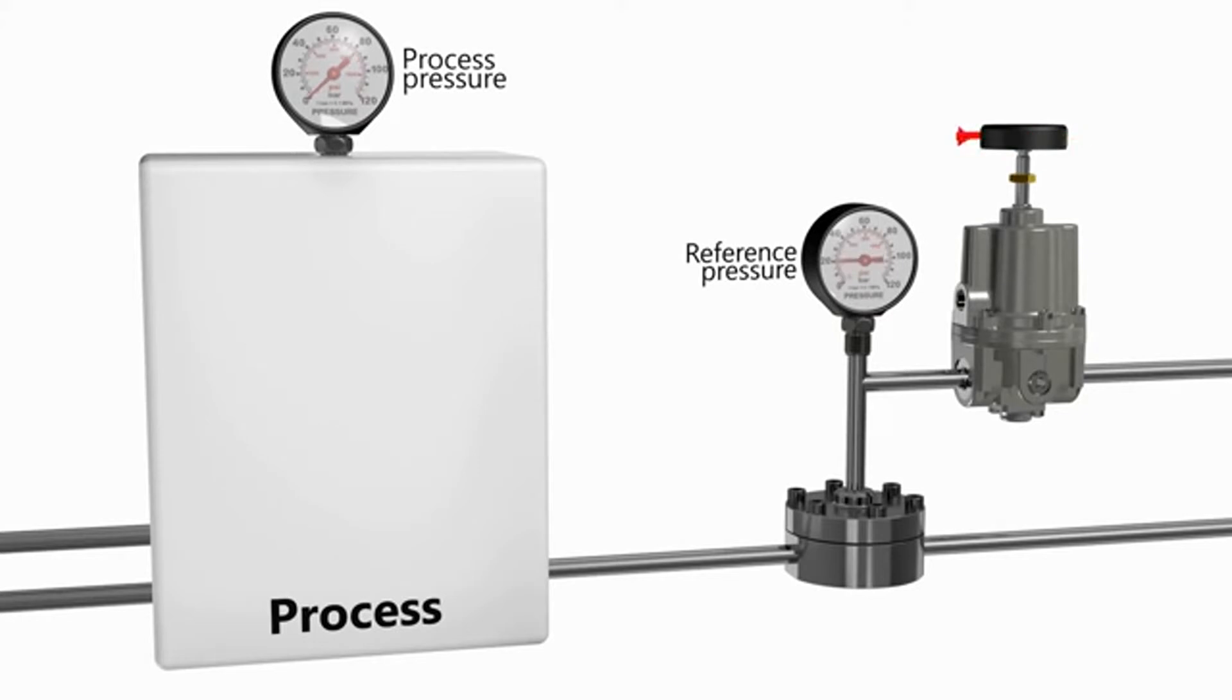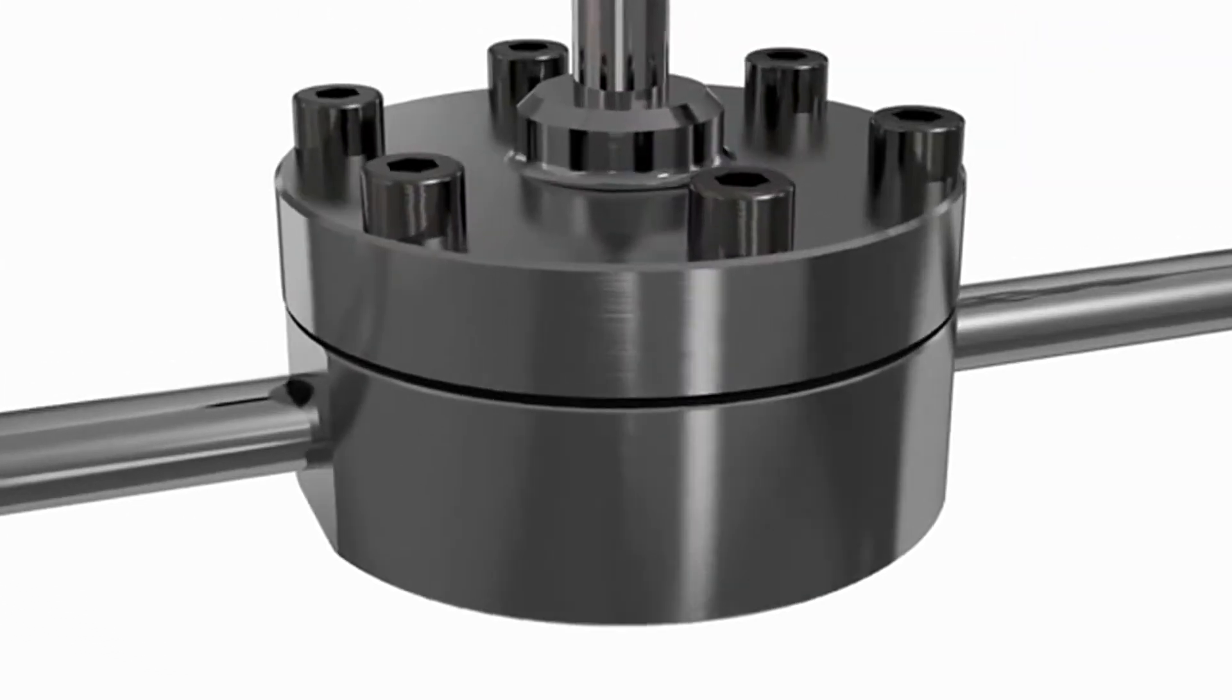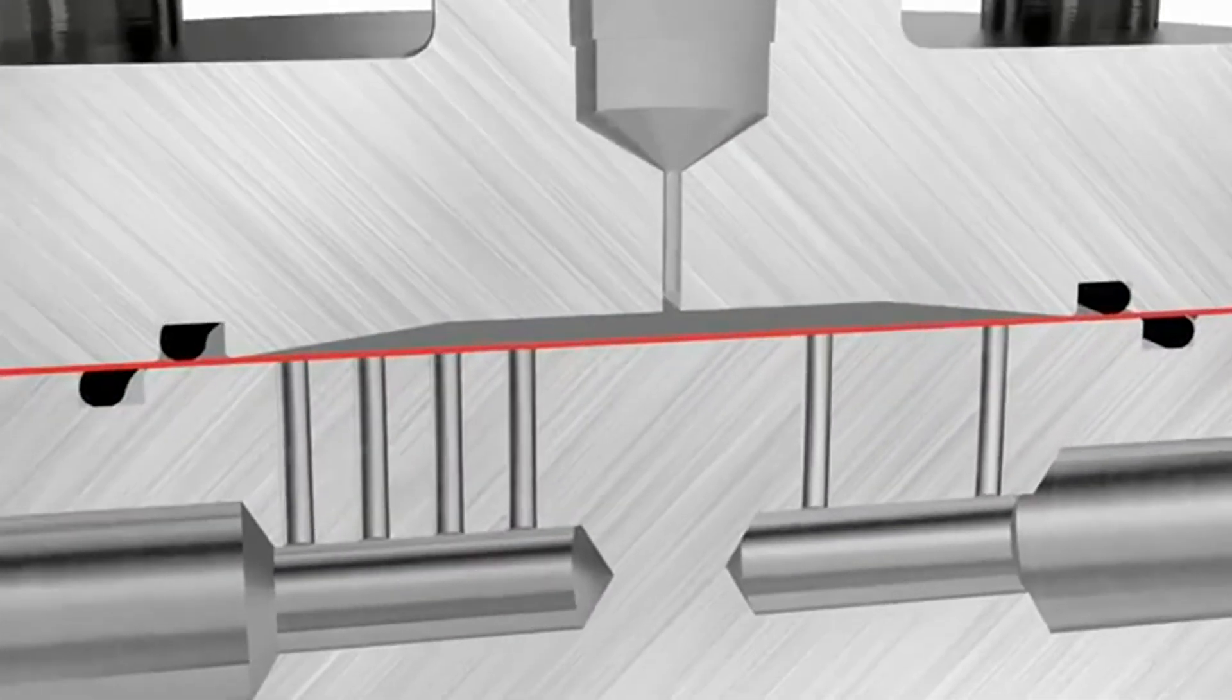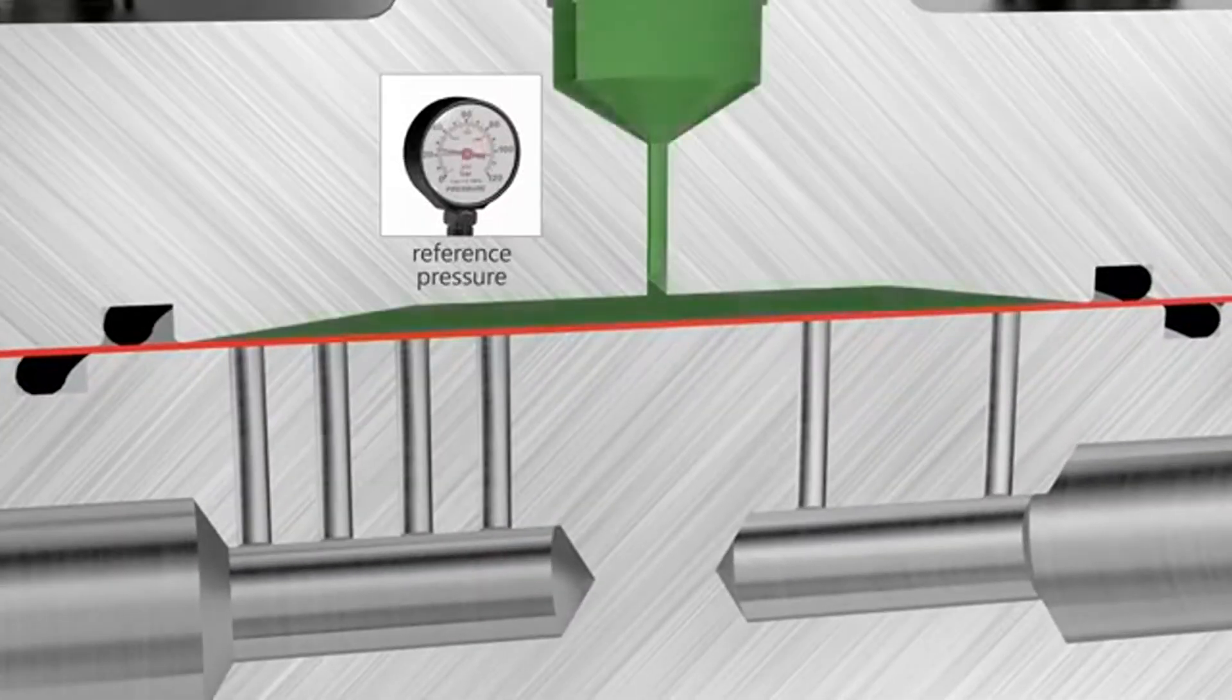This regulator is connected to the reference port of the unit and sets the required pressure in the dome of the Equilibar. The back pressure regulator will hold the process pressure with a 1-to-1 ratio. Only when the process pressure exceeds the pressure set in the dome will flow be released through the BPR.